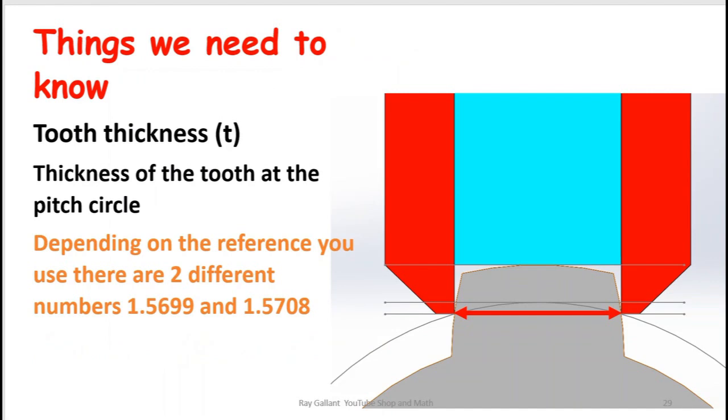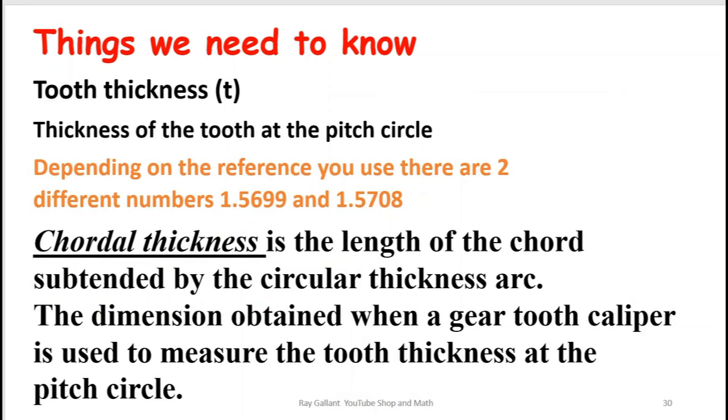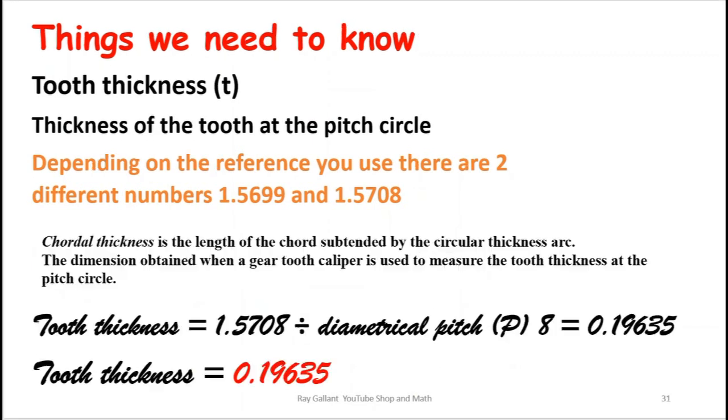In making this video I used about seven different sources and in some cases there's two different numbers that we used for our tooth thickness. So we are going to use the number 1.5708. We're going to divide that by the diametrical pitch which in our case is 8. So therefore our tooth thickness is 0.196.